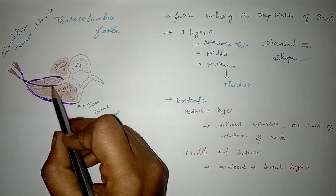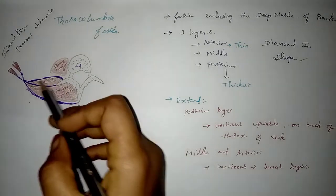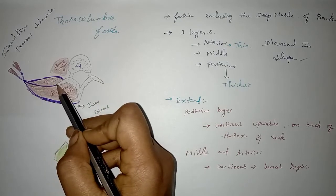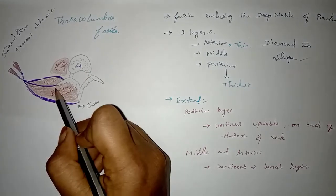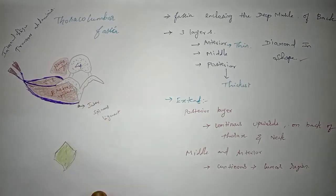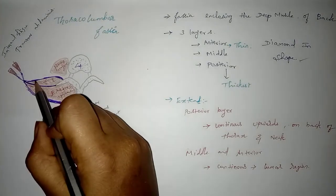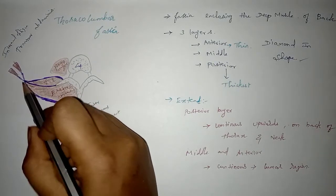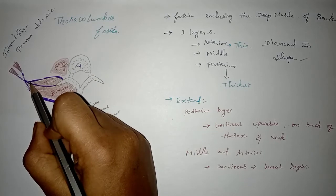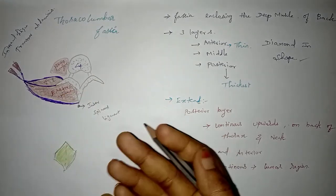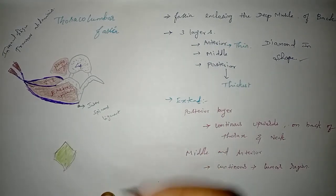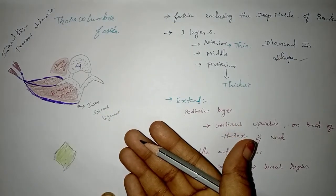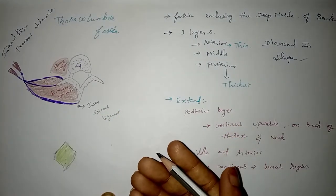For the middle layer attachment: it is attached to the transverse processes of the lumbar vertebrae and also the intertransverse ligament. Laterally it is attached to the anterior layer at the lower border of quadratus lumborum. Superiorly it is attached to the lower border of the twelfth rib, and inferiorly to the posterior part of the intermediate area of the iliac crest.